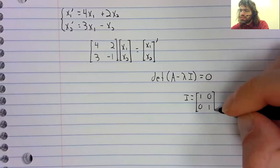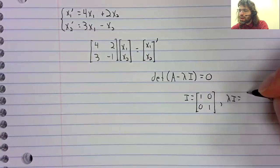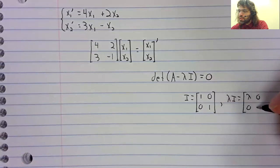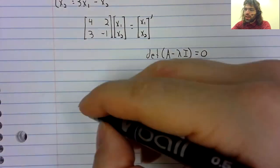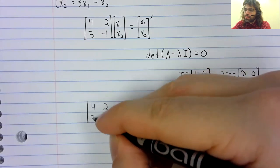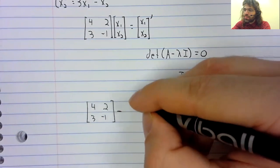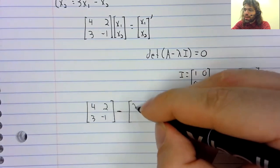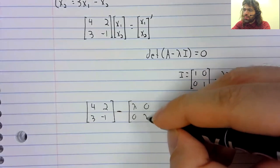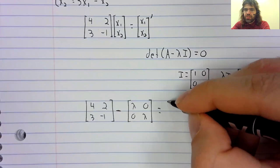I is this. So lambda I is this. And A minus lambda I is this.